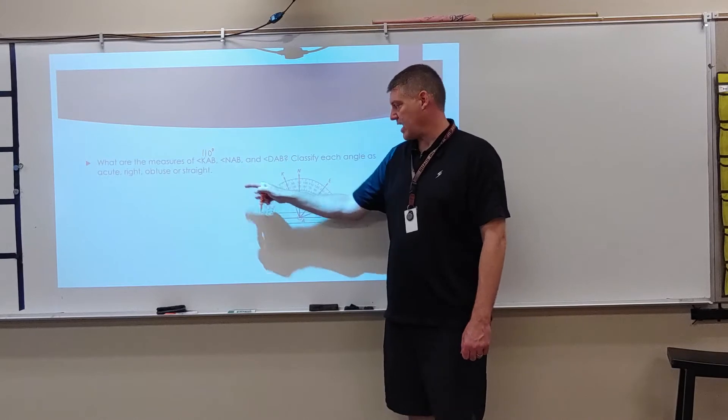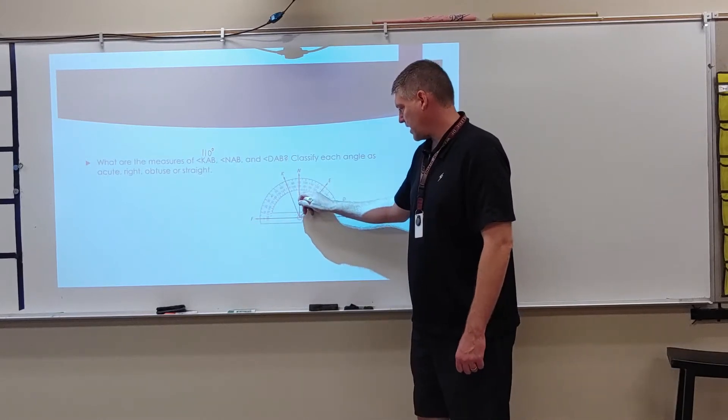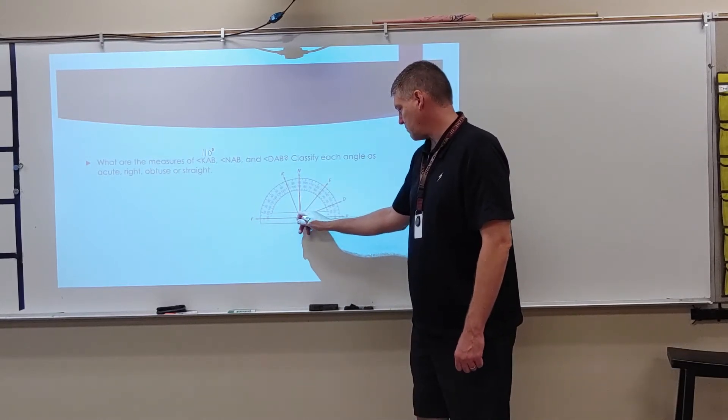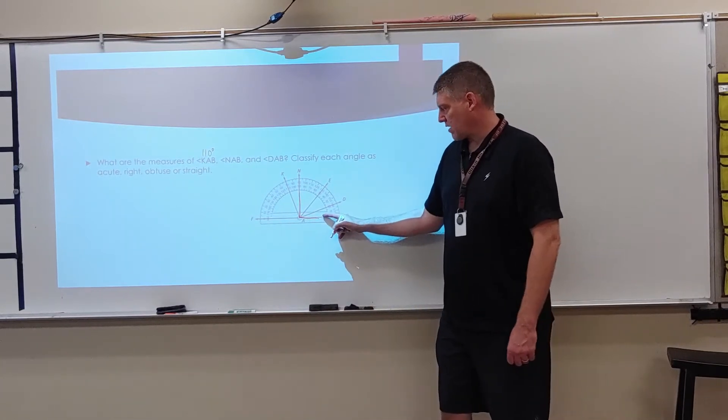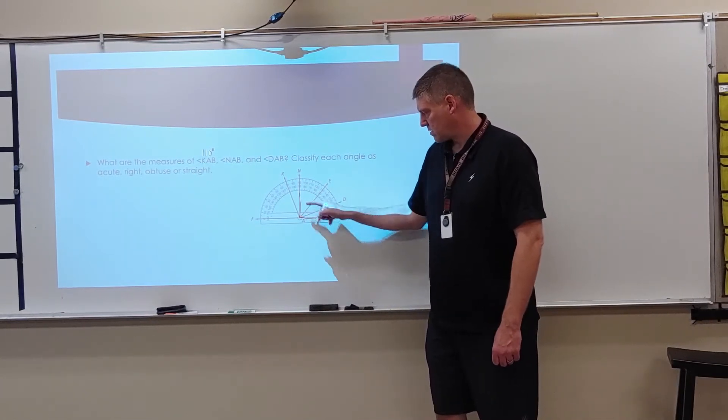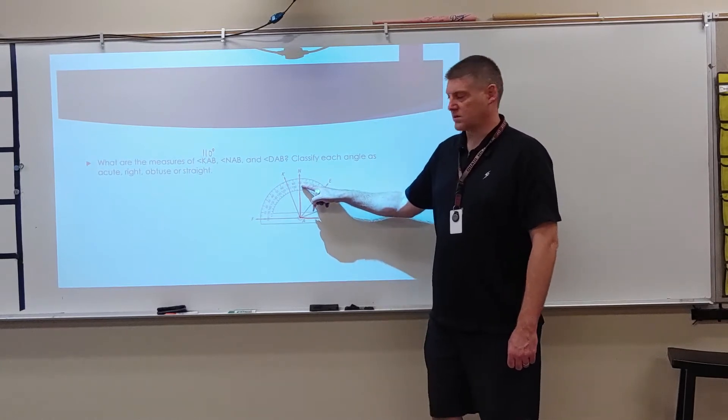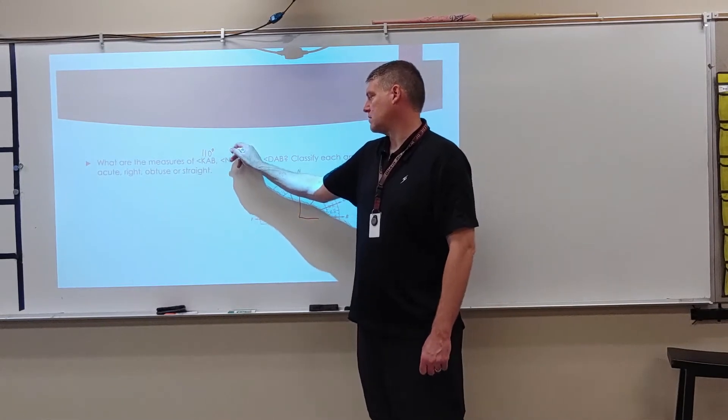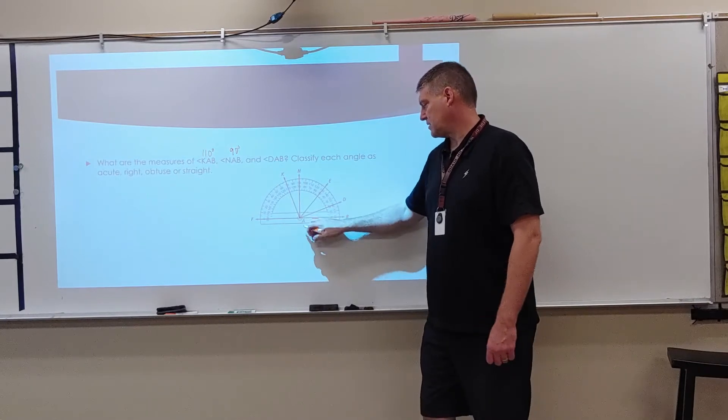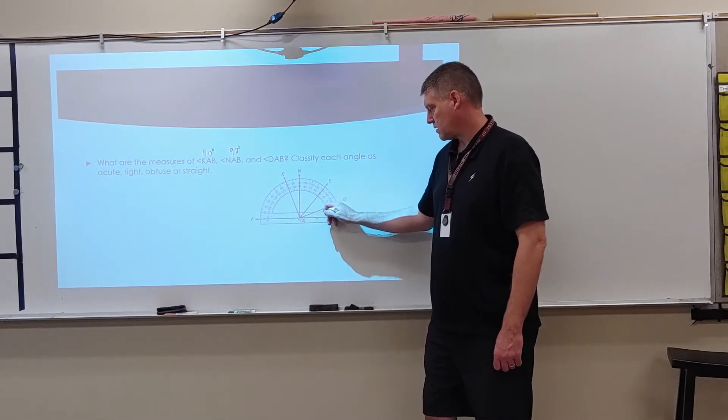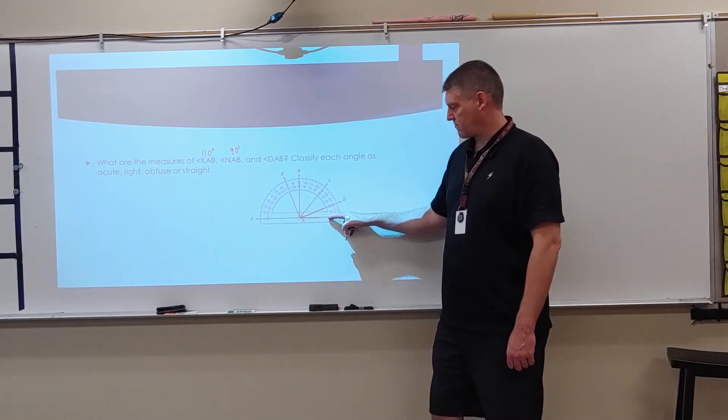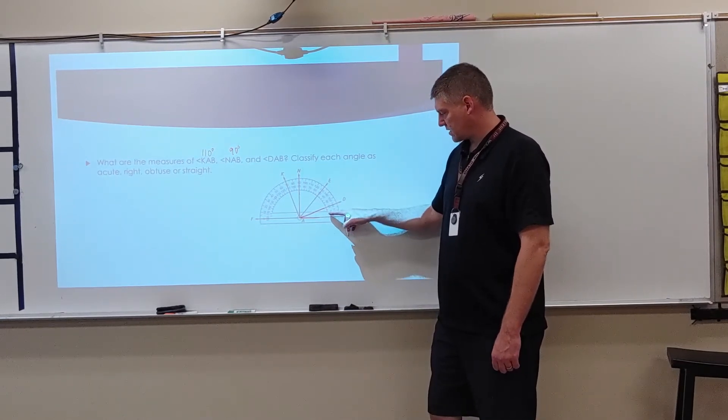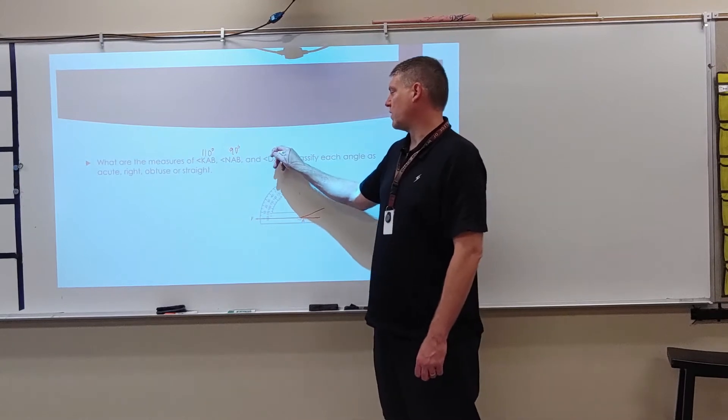Now I'm going to look at NAB. Well, here's N. There's A. And B comes out to the side. So I'm now going to measure it from here. Oh, it looks like it's 90 degrees. And then DAB, here like this, DAB, I'm going to find a measurement here. This angle is now 10, 20, 20 degrees.